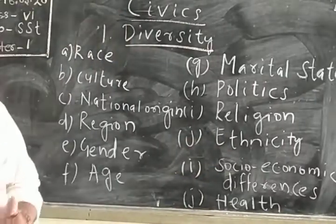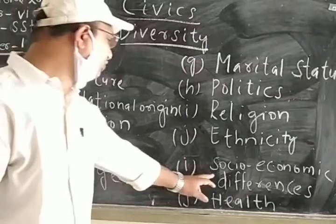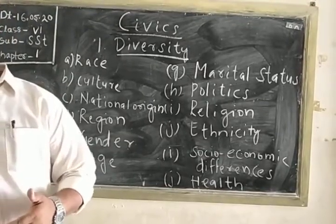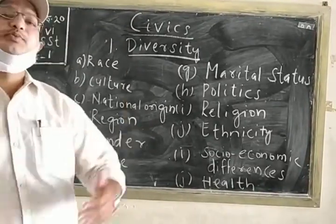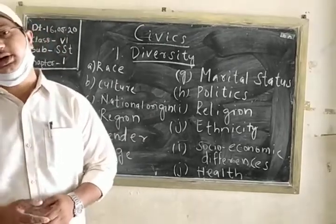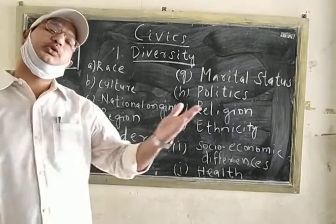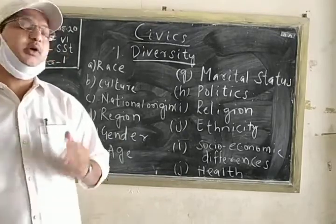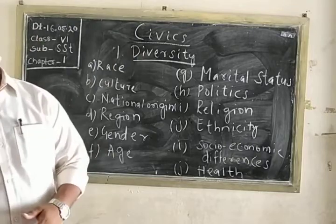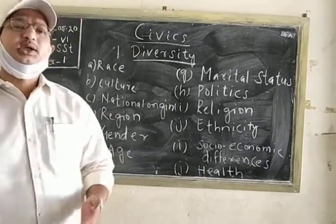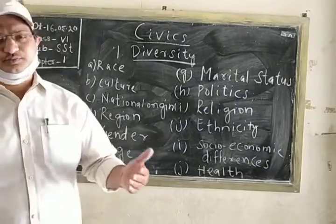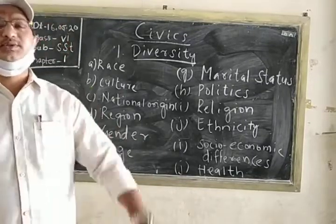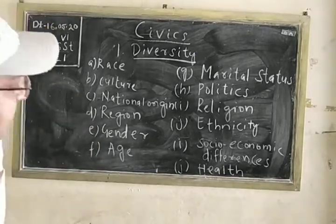Then, ethnicity — ethnicity means race. Then, the last one is socio-economic differences — socio-economic differences means the amount of wealth and income we are earning. There are different types of people in our society: some are rich, some are middle class, and most of the people in our country belong to the BPL, that is the below poverty line. There is a difference in income. Then, health — some are healthy, some are sick, some may be in hospitals. Everybody has a different state of mind and different health conditions.